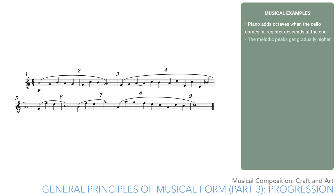In this example, the melodic peaks get gradually higher. If you chart the highest notes in each phrase of the melody, they measure 2, 4, 5, and 7 — they form a gradually rising line.